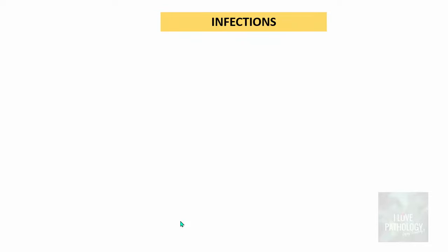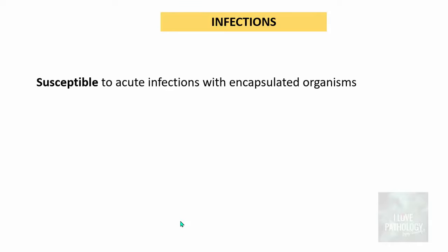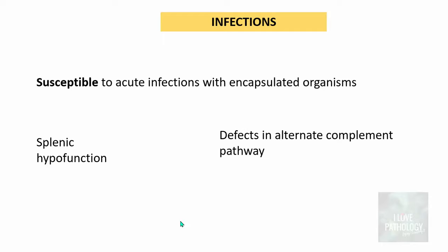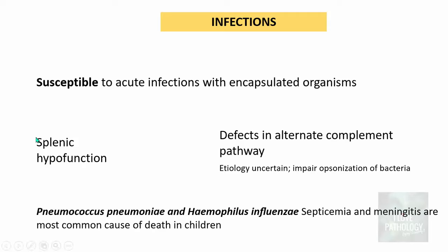Sickle cell anemia patients are more susceptible to acute infections with encapsulated organisms. The most common reason is splenic hypofunction, which reduces immunity. A second important reason is defects in the alternate complement pathway — the etiology of these defects is uncertain, but they impair opsonization of bacteria. Streptococcus pneumoniae and Haemophilus influenzae septicemia and meningitis are the most common causes of death in children with sickle cell anemia.